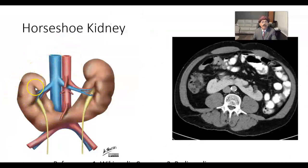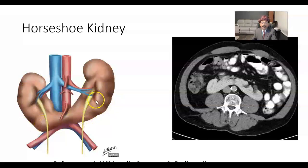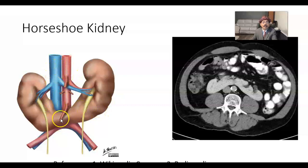This is the U-shaped horseshoe kidney. The lower pole of the right kidney is united to the lower pole of the left kidney. Shown here are the ureters, the pelvi-ureteric junction, the abdominal aorta, and the inferior vena cava. The isthmus area is blocked in around 60 to 70 percent of cases by the inferior mesenteric artery, also shown here along with the superior mesenteric artery.